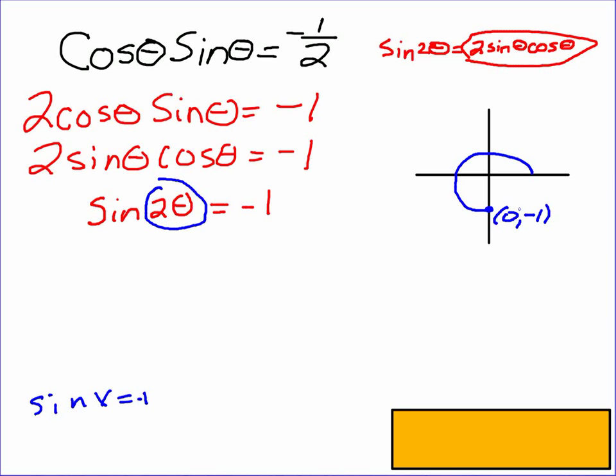I know that the coordinates down here are 0, negative 1. And since any ordered pair is cosine sine, we've found where the sine is negative 1, which would be what? 3 pi over 2. Okay, so we know the sine of 3 pi over 2 is negative 1.